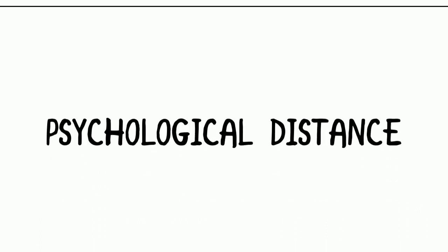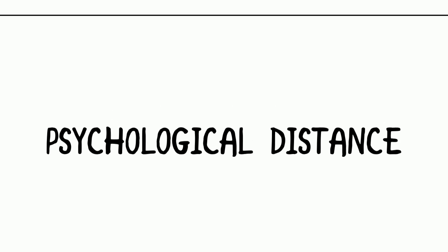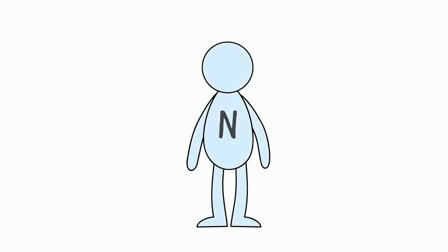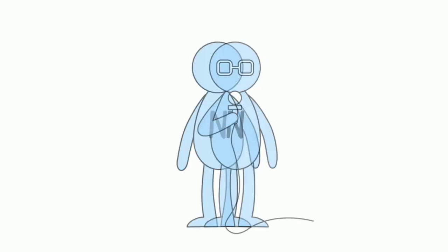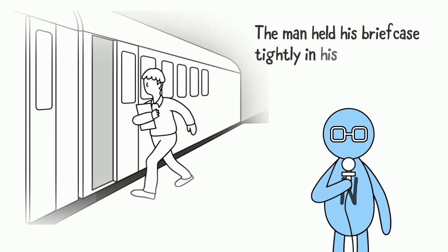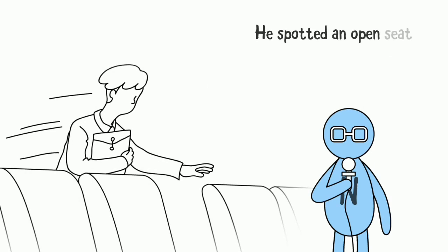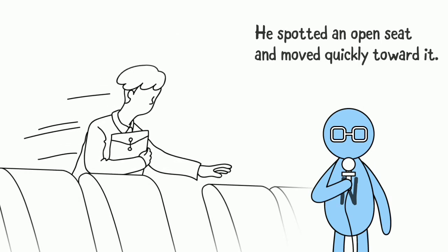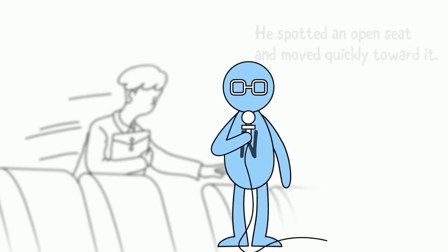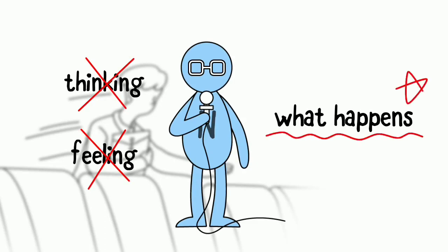But there also is another kind of distance: psychological distance. Sometimes the narrator is psychologically distant from the characters, like a news reporter. 'The man held his briefcase tightly in his right hand as he stepped onto the train. He spotted an open seat and moved quickly toward it.' The narrator knows nothing about what the character is thinking or feeling. Instead, the narrator only focuses on what happens.